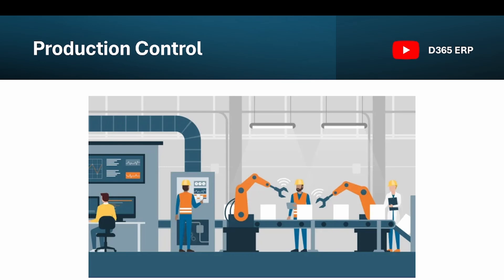As we progress in the second or third part, we will tackle more advanced topics such as discrete manufacturing, accounting impacts, subcontracting, and how we can configure the BOM, route, resources, and calendars in Dynamics for discrete manufacturing. Even if you already know the basics, I recommend watching the whole series — it is a great refresher for experienced professionals in manufacturing.